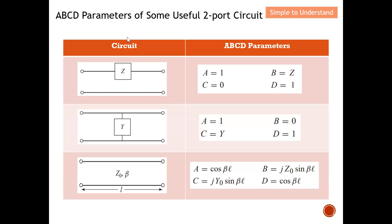Let me use a few examples of ABCD parameters to describe some useful two-port circuits. From here you can see all the circuits — for example, for the impedance, for the admittance, and for the transmission line, I can easily use ABCD to describe the circuit.